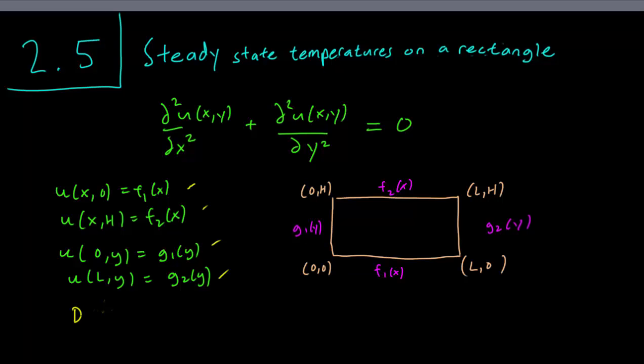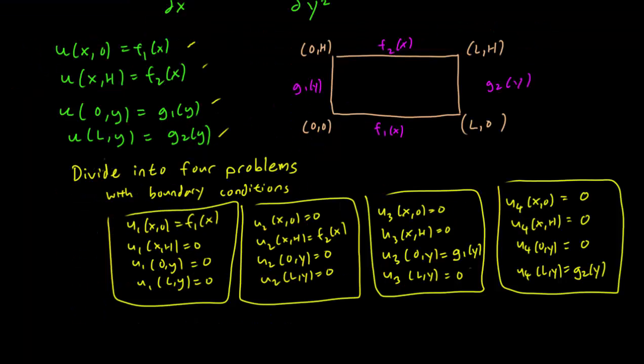So it turns out that solving the Laplace equation with these boundary conditions is going to be really difficult. So we're going to divide our problem here into four different problems with simpler boundary conditions. So we have here four different sets of boundary conditions. And when you add the four together, you get the boundary condition we started out with. So in fact, we have u equals u1 plus u2 plus u3 plus u4.